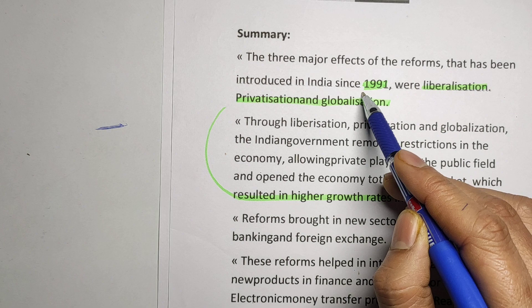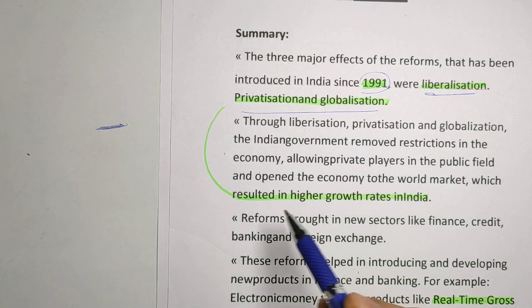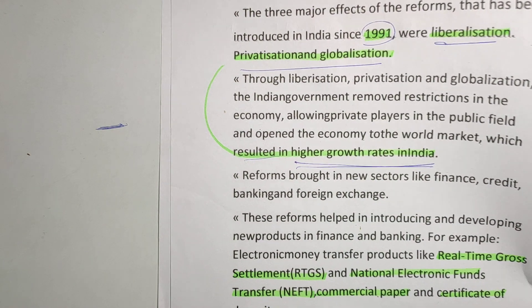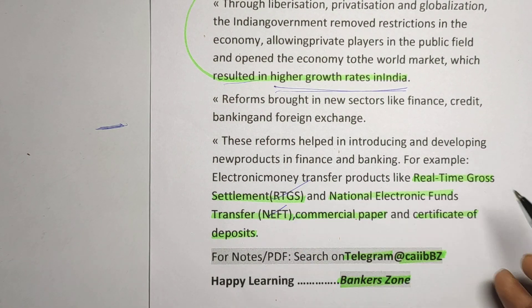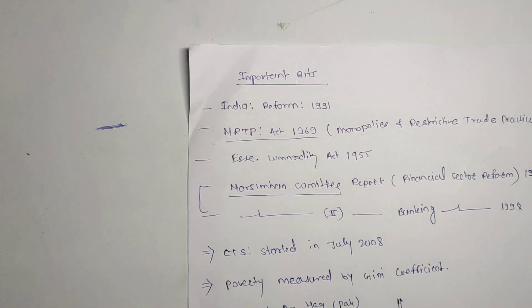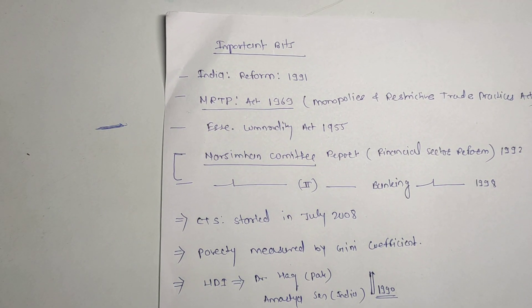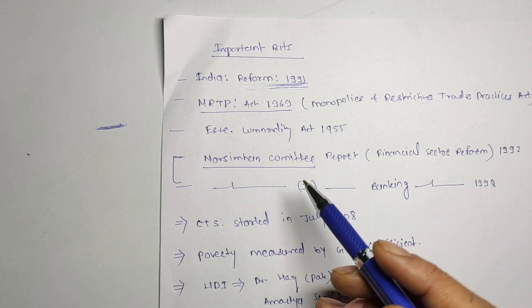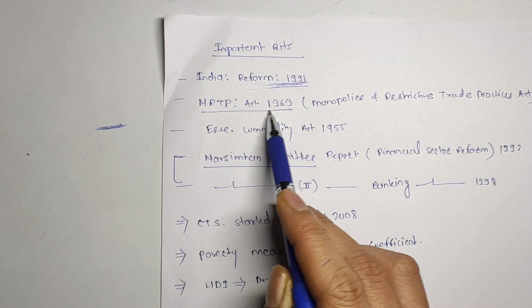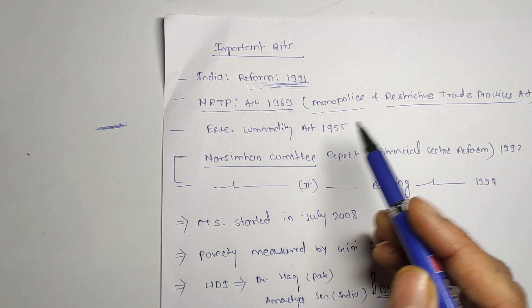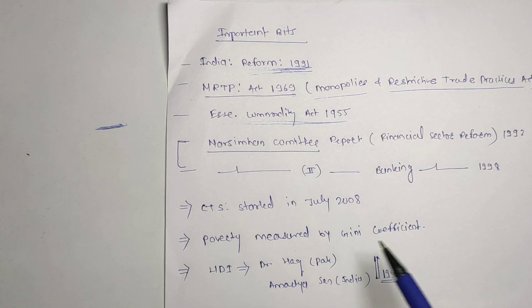Summary: In 1991 India adopted LPG reforms, which resulted in higher growth of India's GDP. After the reforms, instruments like RTGS, NEFT, commercial paper, and certificate of deposit were introduced. Remember: major reforms in India were in 1991 — LPG reforms. The MRTP Act 1969 — Monopolies and Restrictive Trade Practices Act — was abolished, and the Essential Commodities Act 1995 you can remember by year.